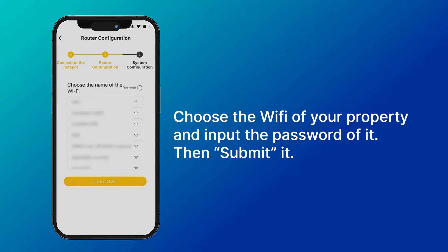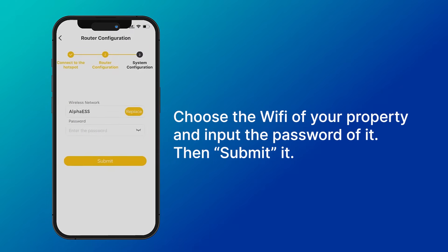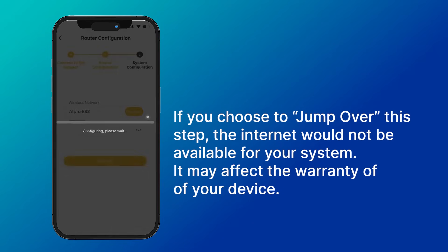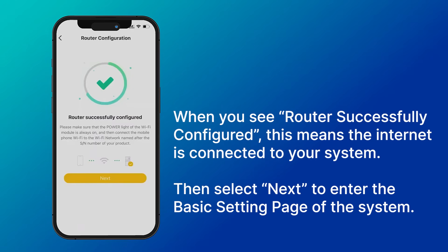Choose the Wi-Fi of your property and input the password, then submit it. Please note: if you choose to skip this step, the internet will not be available for your system and may affect the warranty of your device. When you see 'router successfully configured,' this means the internet is connected to your system successfully. Then select next.